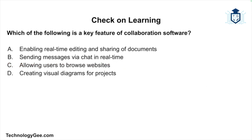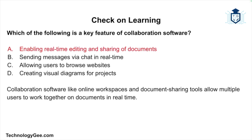Next question: which of the following is a key feature of collaboration software? Is it enabling real-time editing and sharing of documents? Is it sending messages via chat in real time? Is it allowing users to browse websites? Or is it creating visual diagrams for projects? The correct answer is: it enables real-time editing and sharing of documents. Collaboration software like online workspaces and document sharing tools allow multiple users to work together on documents in real time.